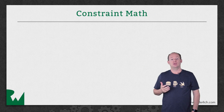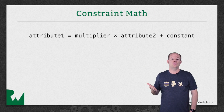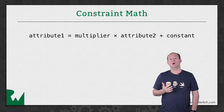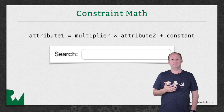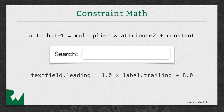A constraint is calculated using this formula: Attribute 1 is equal to multiplier times Attribute 2 plus a constant. When you define a constraint, you're really filling in the pieces of the formula. So when you create a constraint between the text field leading edge and the label trailing edge with a space of 8, you're defining Attribute 1 as the text field leading edge, the multiplier is 1, Attribute 2 is the label trailing edge, and the constant is 8.